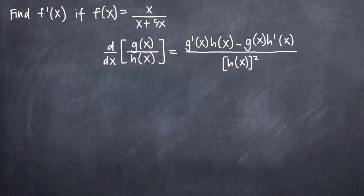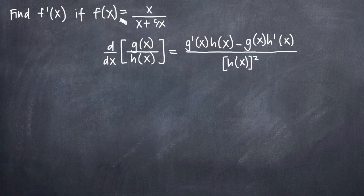In this particular problem, we've been asked to find the derivative of f(x) equals x divided by the quantity x plus c over x. We're going to be denoting the derivative as f prime of x, which indicates the first derivative of our function f(x). The first thing we need to notice is that it's a rational function — the quotient of two polynomials — and because it's a quotient, we're going to need to use the quotient rule to take its derivative.